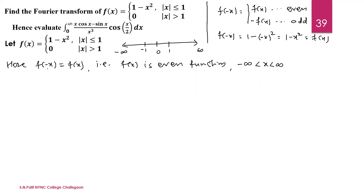That is, f(-x) = f(x), so the function is an even function on (-∞, +∞). If the function is even, then we use the Fourier cosine transform. If the function is odd, then we use the sine transform. And if the function is neither even nor odd, then we use the Fourier transform directly. Since the function is even, we use the Fourier cosine transform.